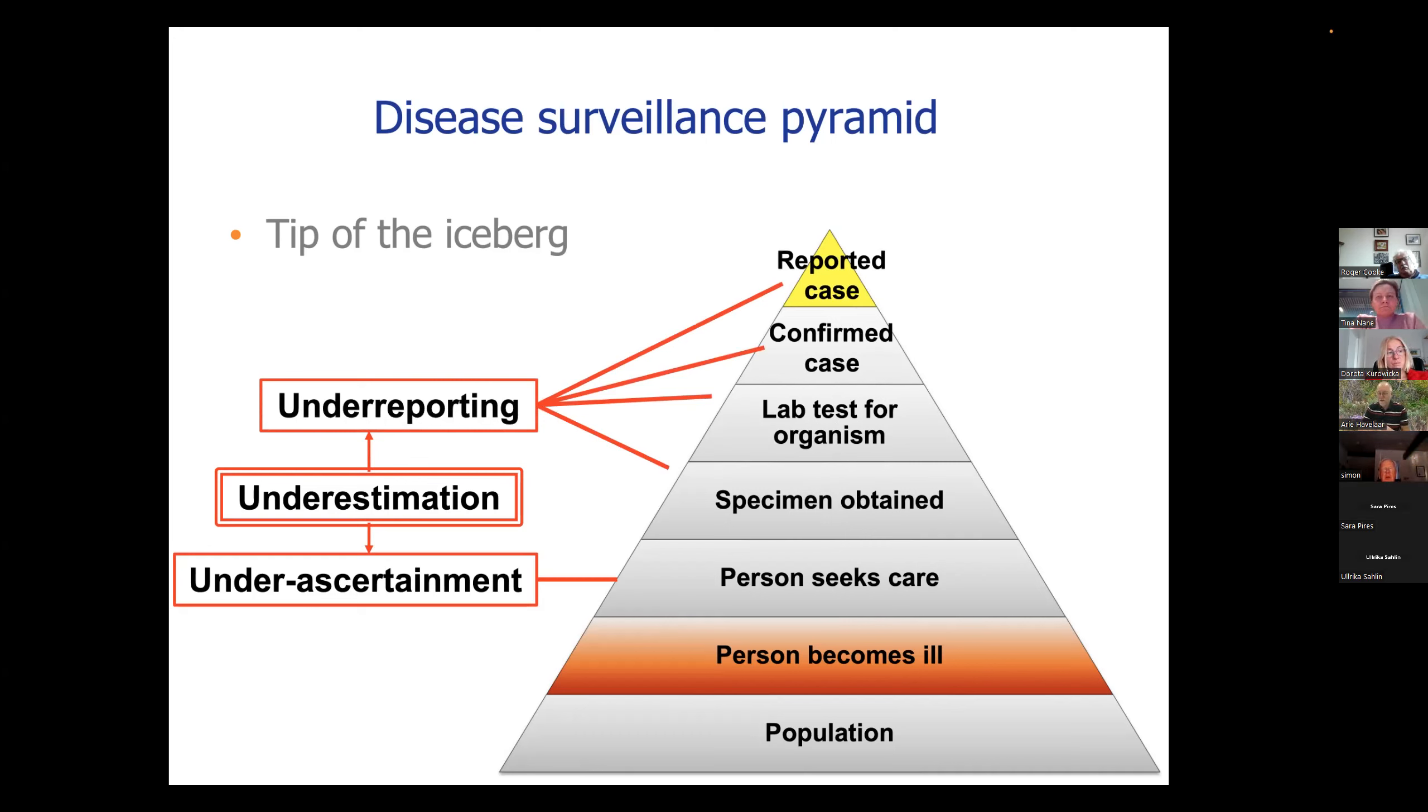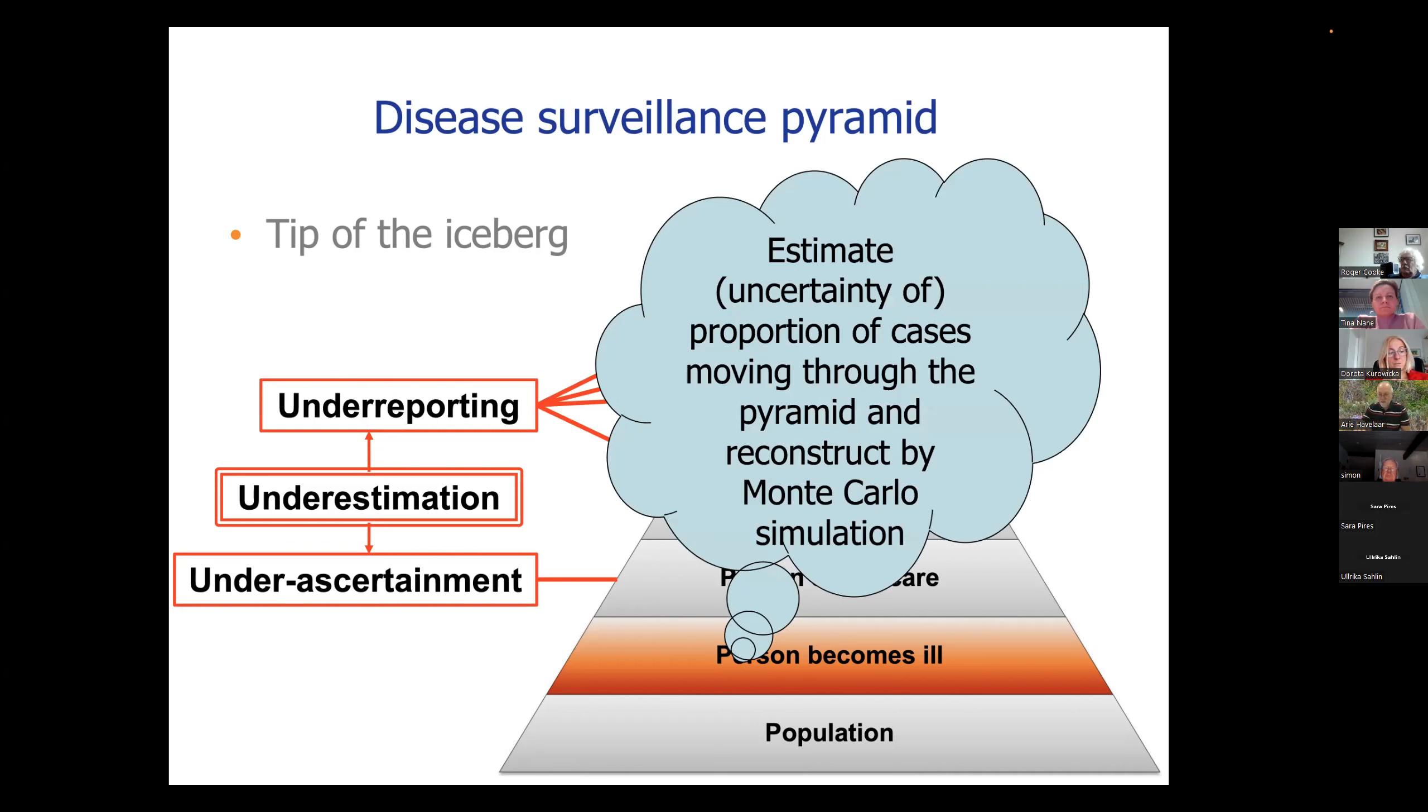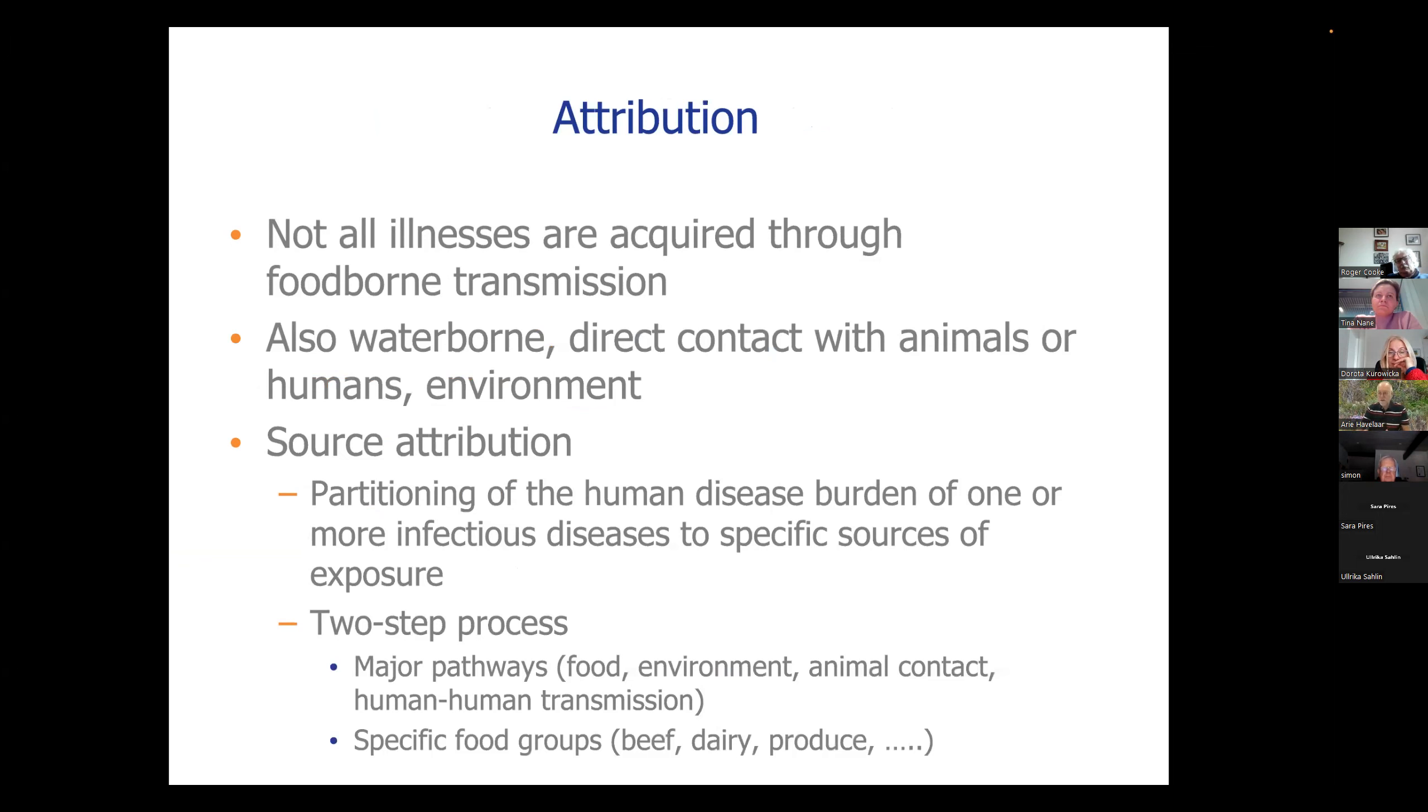So a lot of countries, the US, the Netherlands, Denmark, the European Union as a whole, Australia, New Zealand, high income countries mainly, are working on trying to understand the proportion of cases that move from one step in the pyramid to the other. And then use Monte Carlo simulation methods to reconstruct the pyramid, going down to estimates of the total number of people who fall ill. But then you still don't have an estimate of foodborne disease because not all these illnesses, of which you saw the names in one of the first slides, is actually transmitted through food. They can also be transmitted through water or direct contact with animals or human-to-human transmission or through the environment.